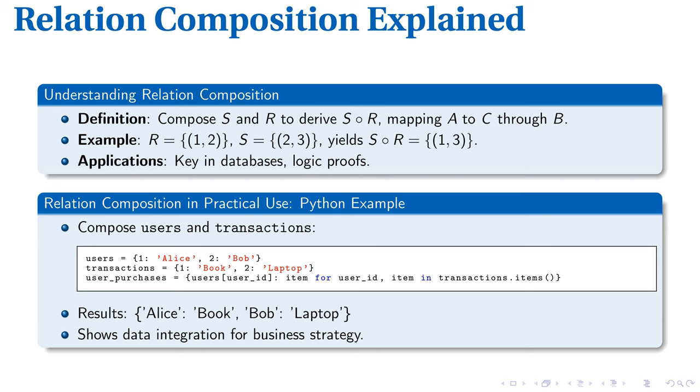Focusing on the Python code, take note of the dictionaries users and transactions. On implementing relation composition, we obtain a new dictionary, user_purchases, which efficiently maps the user to their respective purchases. It's a practical exhibition of how relation composition streamlines data integration, bolstering business strategies with efficient resource management.